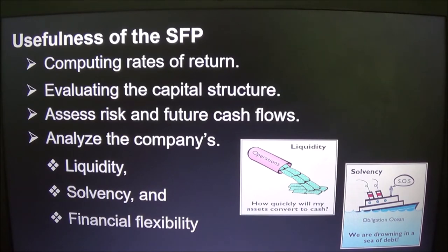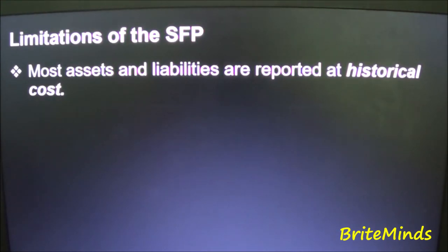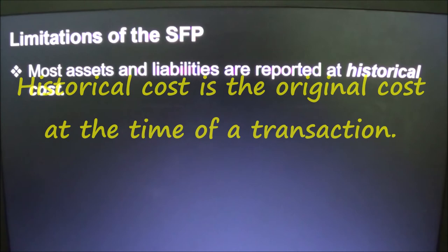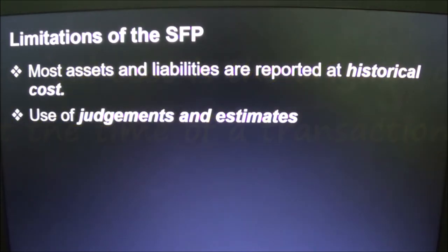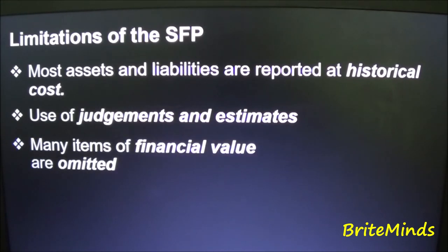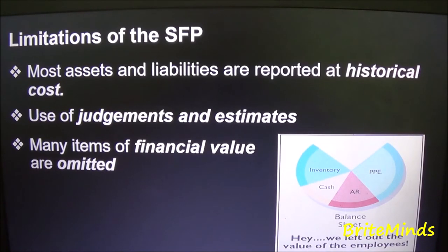What are the limitations of the Statement of Financial Position? First, most assets and liabilities are reported at historical cost — the original cost at the time of the transaction. Another limitation is the use of judgments and estimates. Additionally, many items of financial value are omitted; for example, employees are considered valuable but are not found on the balance sheet.